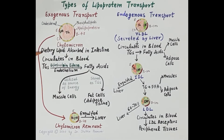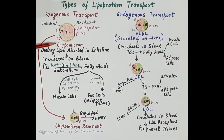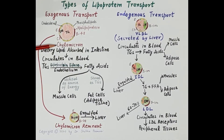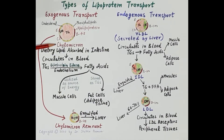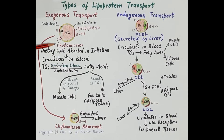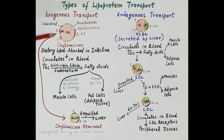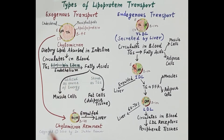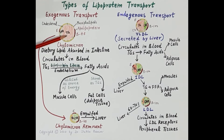Dietary lipids — that is, lipids derived from the diet — are absorbed in the intestine as chylomicrons. Chylomicrons are lipoproteins and are the biggest of all lipoproteins. The size of a chylomicron ranges from 100 to 500 nanometers.